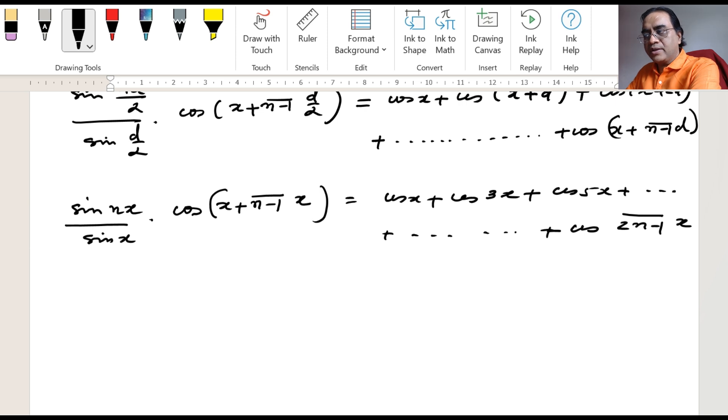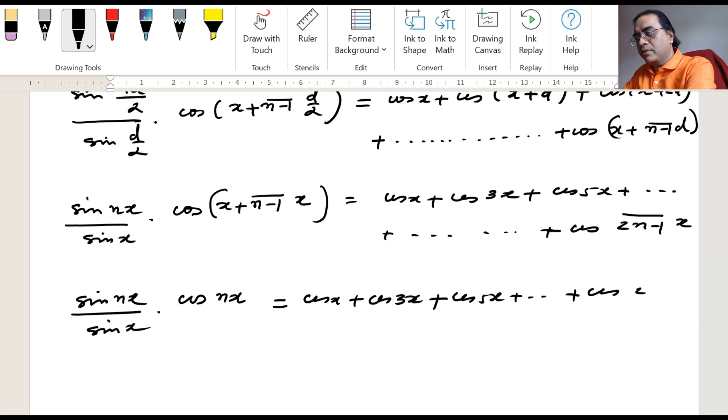The x would get cancelled, so we have got sin nx divided by sin x times cos nx equals cos x, cos 3x, cos 5x, and so on up to cos 2n minus 1 x.